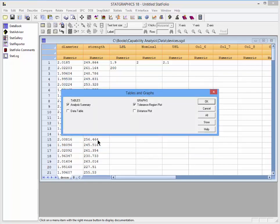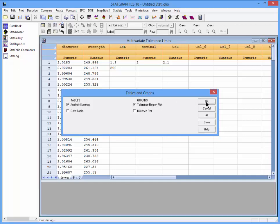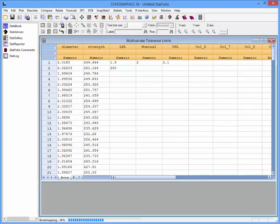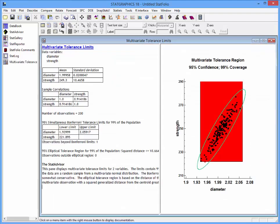On the tables and graphs button, I can select between two tables and two graphs. Again, I'll take the defaults and press OK. At this point, it will start the Monte Carlo simulation to figure out the value of C, and when that's done, it will display an analysis window.